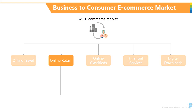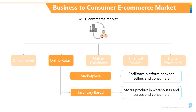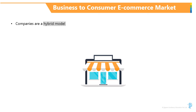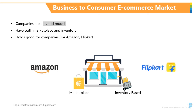Within online retail, there are two broad ways businesses work. The marketplace model, where the platform is just a facilitator between sellers and consumers and typically charges a commission to the sellers. The second model is inventory-based, where the business buys the items they want to sell, stores them in their warehouses, and serves the end consumers. A lot of companies are actually a hybrid model, having both marketplace as well as inventory — and that holds good for companies like Amazon, Flipkart, and many others.